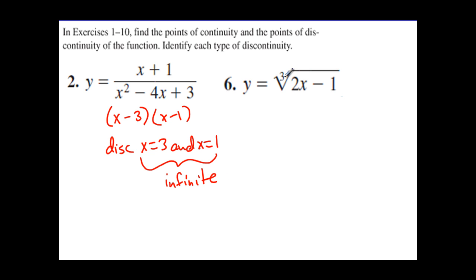In number 6, we have y = ∛(2x - 1). There are no problems with taking the third root. You can take the third root of any values you want. You can take the third root of positive values, you can take the third root of negative values. So there are no discontinuities. There are none for this one.